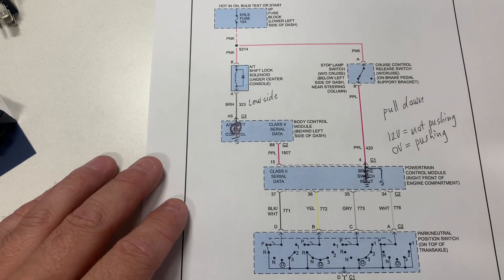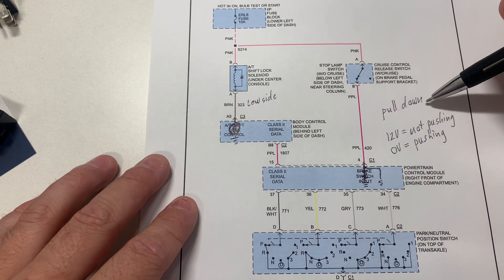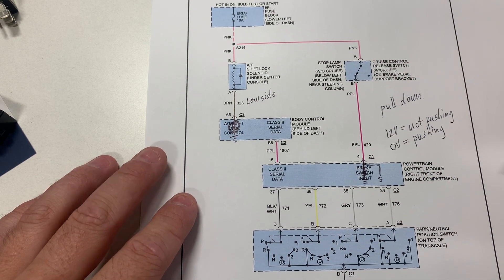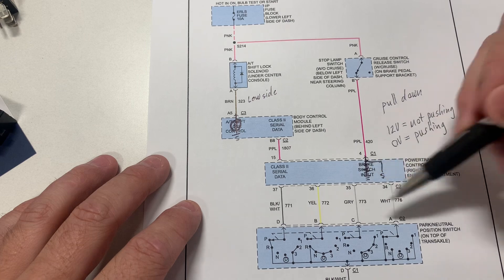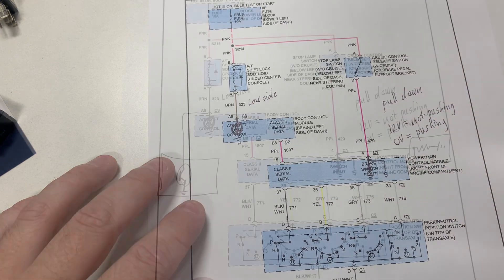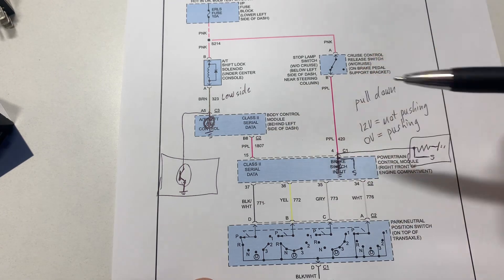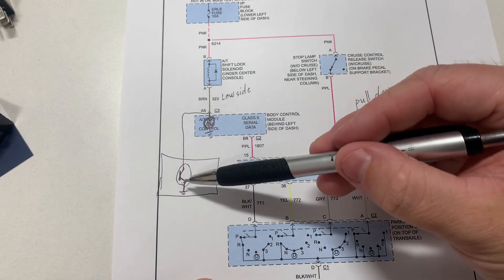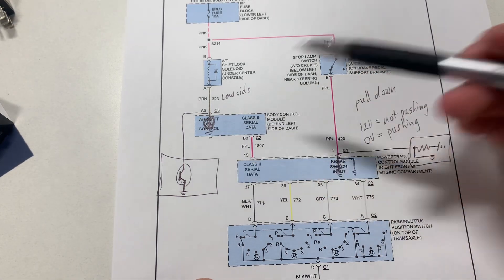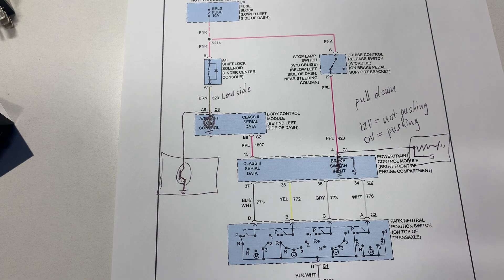Hopefully that helps you understand the difference between low and high side drivers, pull-up versus pull-down circuits, and what's going on inside the computer that the diagrams don't show us. I also redrew those internal diagrams so you can see them more clearly. If you have any questions, leave them in the comments.